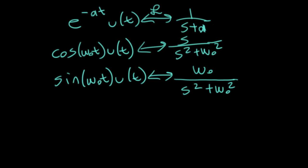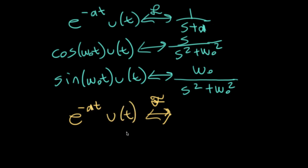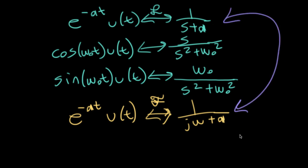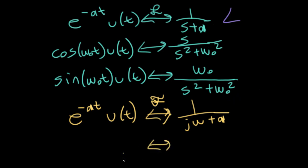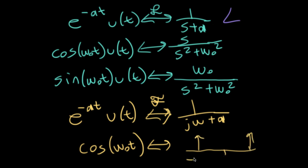You might immediately suspect something fishy is going on. If you think back to the Fourier transforms, we wrote that e to the minus at u(t) — with the condition that a is bigger than zero — transforms into 1 over j omega plus a. So this looks very similar: I have s plus a here and 1 over j omega plus a there. It's not a coincidence they have a very similar form. But in Fourier transform land, cosines looked very different — cosine omega-0 t transformed into a thing with a couple of delta functions: a delta sitting at minus omega-0 and a delta at plus omega-0, each with height pi.